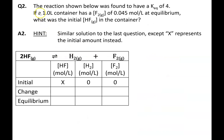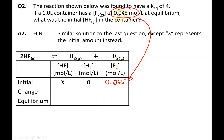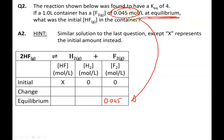In our next example, the reaction was found to have a Keq value of 4. A 1 liter container has a fluorine concentration of 0.045 moles per liter at equilibrium — what was the initial HF concentration? This question assumes HF was the only substance present at the beginning. Since I'm solving for the initial concentration of HF, I'll let x represent that, while the concentrations of hydrogen and fluorine start at zero.